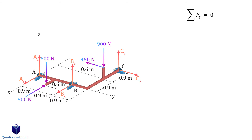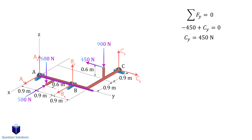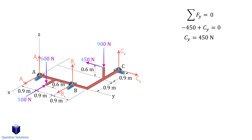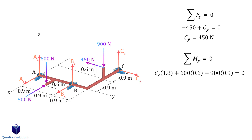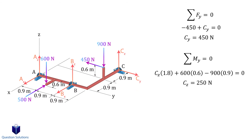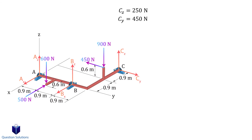We write an equation of equilibrium for the y-axis forces — since there's only one unknown, solving gives us the y reaction at C. To find the z reaction at C, we write a moment equation about the y-axis. Using the scalar method — multiplying forces by perpendicular distance instead of the cross product — we need to be careful about signs using the right-hand rule. We have the z-direction reaction times its perpendicular distance, plus the 600 newton force times 0.6 meters, plus the 900 newton force times 0.9 meters. The 900 newton force causes a clockwise moment so it's negative.